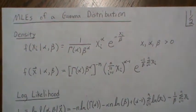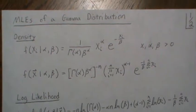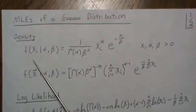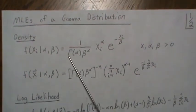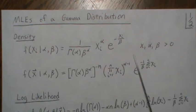Hello, in this video we're going to derive the equations necessary to find the MLEs of a gamma distribution. As a reminder, the density of a gamma is this thing, where this is the gamma of alpha, beta of the alpha, etc.